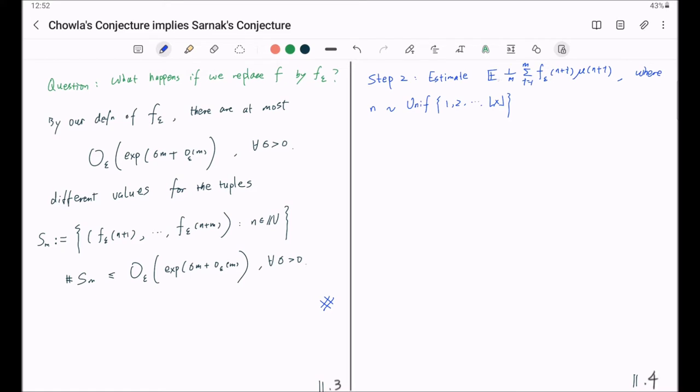Strictly speaking, I should put a subscript x here to emphasize dependence on x. n is drawn from numbers one, two, three, x uniformly randomly. And to this end, we better have a tail bound for this random variable with respect to this probability.